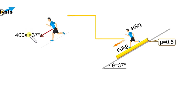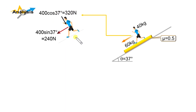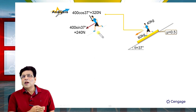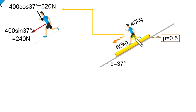The component of weight perpendicular to the incline is 400 cos 37°. Since cos 37° = 4/5, this value is 320 N. The normal reaction offered by the platform on the man will be in the upward direction, as normal reaction is a pushing force that pushes the man perpendicularly away from the surface.